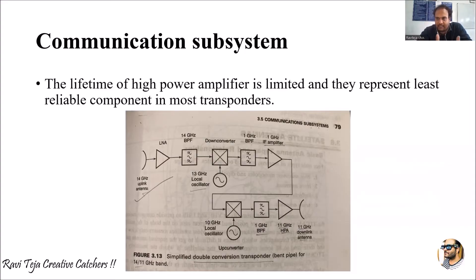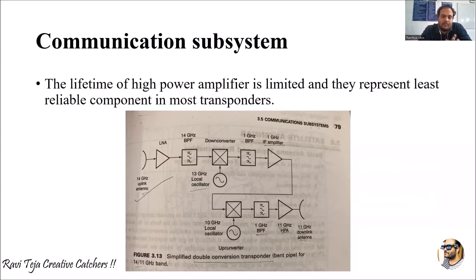The down converted signal is given to a band pass filter of one gigahertz, then carried forward to an intermediate frequency stage. In the intermediate frequency stage, additional frequencies are combined to obtain the desired frequency using an IF amplifier, which helps combine signals and strengthen weak signals. It is then given to another local oscillator for up conversion.